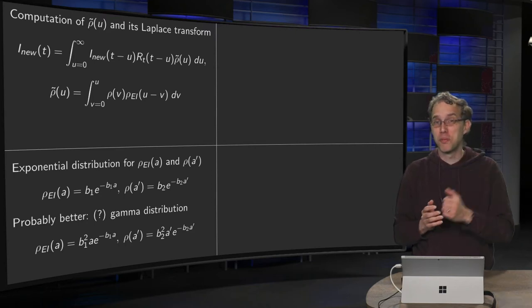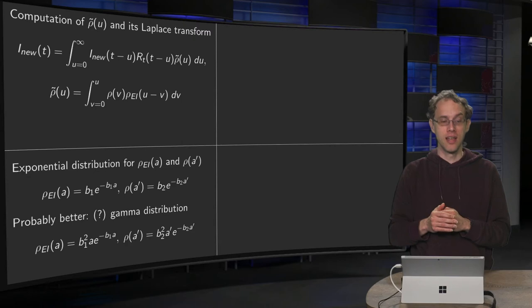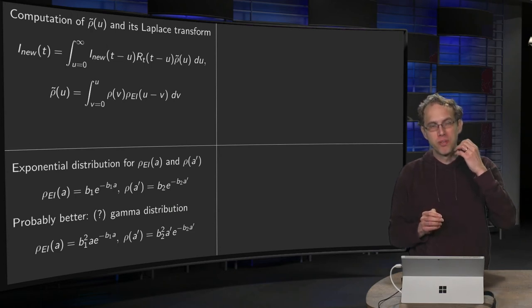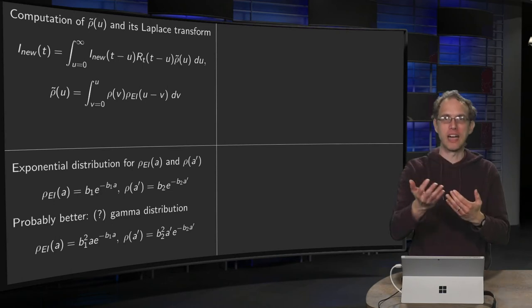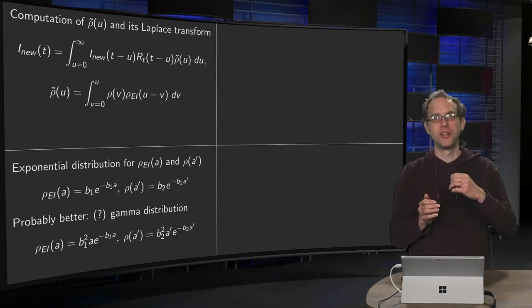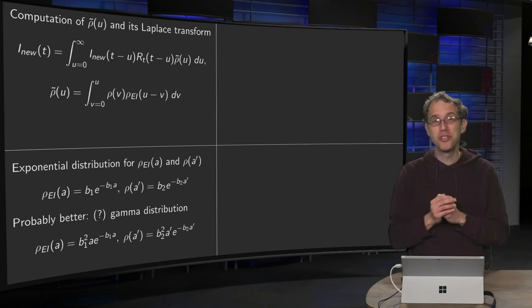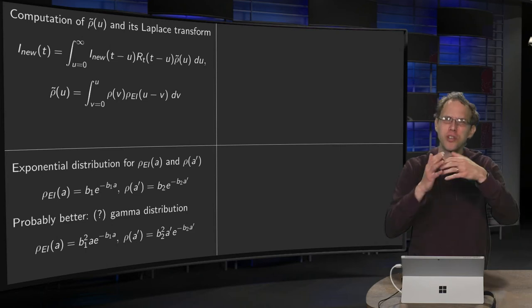So I would expect that it's probably better not to take an exponential distribution for both of these probability densities, but take a gamma distribution instead. Now the computations are quite similar, both with gamma distribution or exponential distribution. So in the remainder of this video, and also in the next one, I will use those exponential distributions because they are used in literature. Computations are a bit easier.